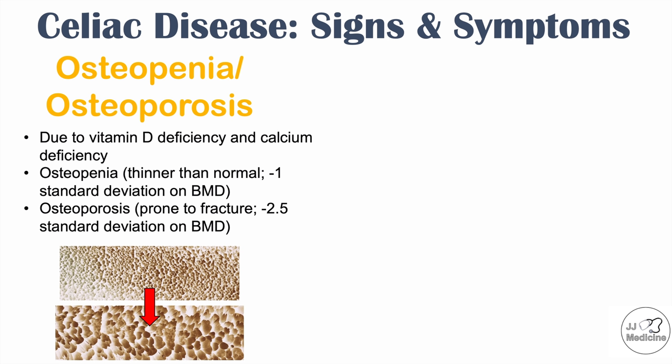Neurological symptoms can occur in celiac disease. Some are due to hypocalcemia, including weakness, sensory loss, and paresthesias — numbness and tingling in parts of the body. Peripheral neuropathy can also occur, more related to vitamin B12 deficiency. Ataxia can also occur in celiac disease patients.